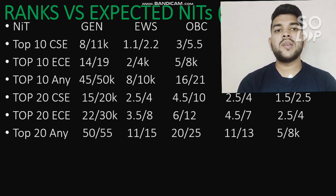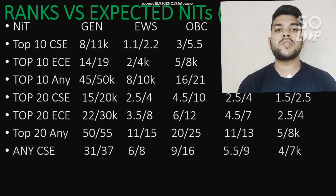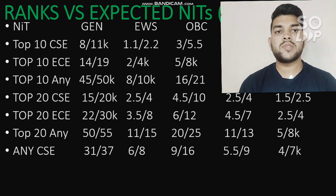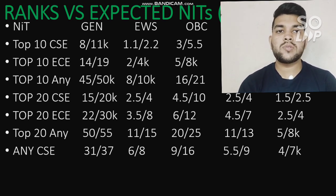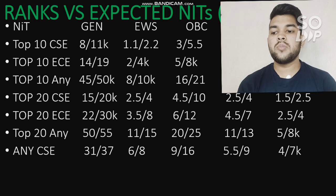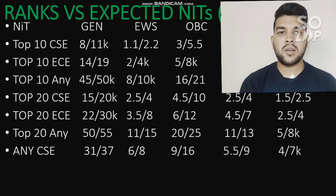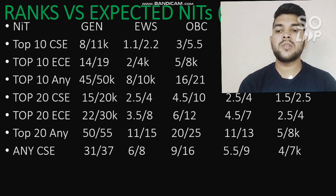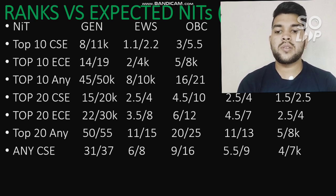For any NIT with CS branch: General category ranks are 31,000 and 37,000 for male and female; EWS 6,000 and 8,000; OBC 9,000 and 16,000; SC 5,500 and 9,000; ST 4,000 and 7,000 — these are the expected cutoffs for male and female.